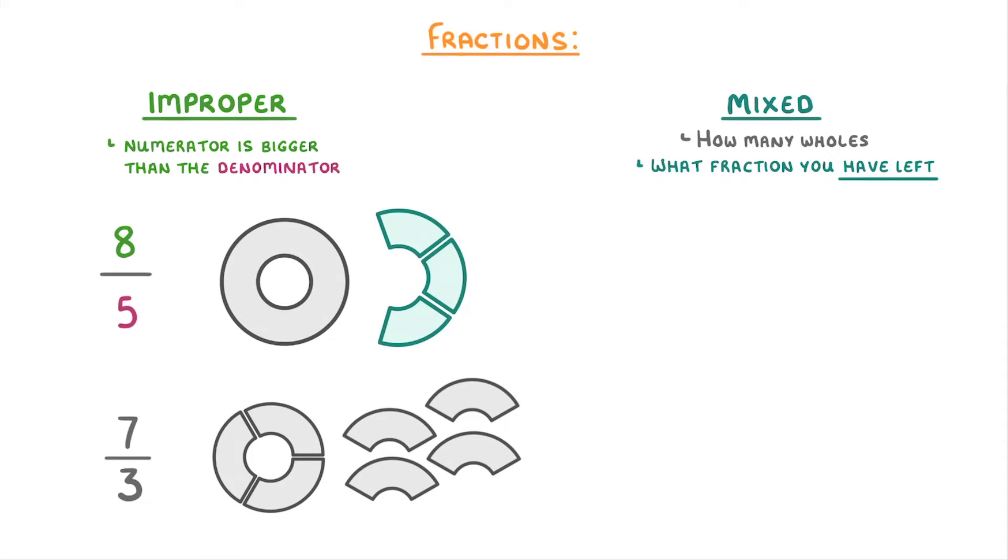So as a mixed number, we just write 1 and 3/5. And for our seven-thirds example, we can make two wholes and then we have this one-third left by itself, so we write it as 2 and 1/3.